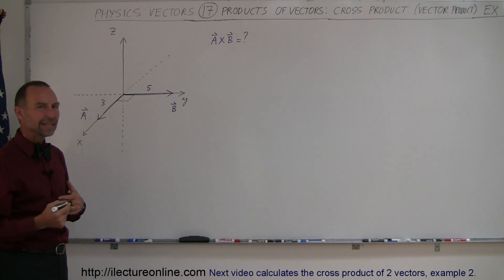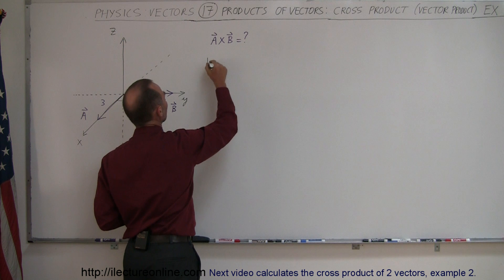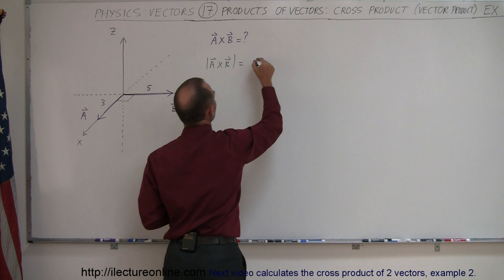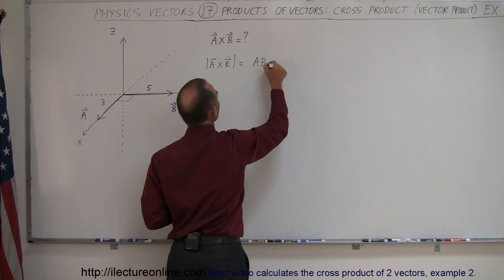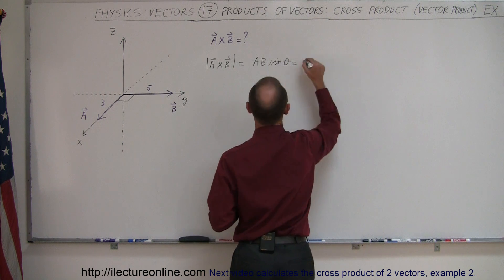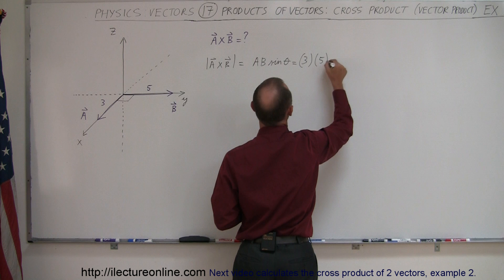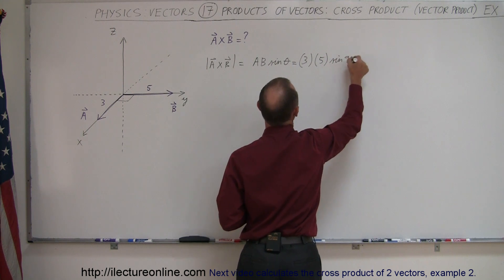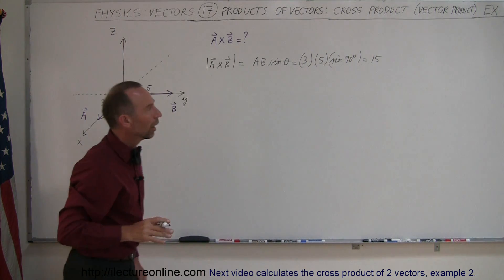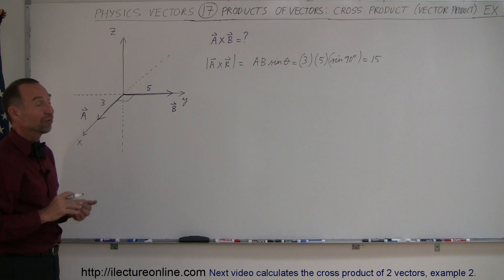So first let's find the magnitude of the resultant. The magnitude of A cross B is equal to A times B times the sine of the angle between them, so that would be 3 times 5 times the sine of 90 degrees, which equals 1, giving us a magnitude of 15.